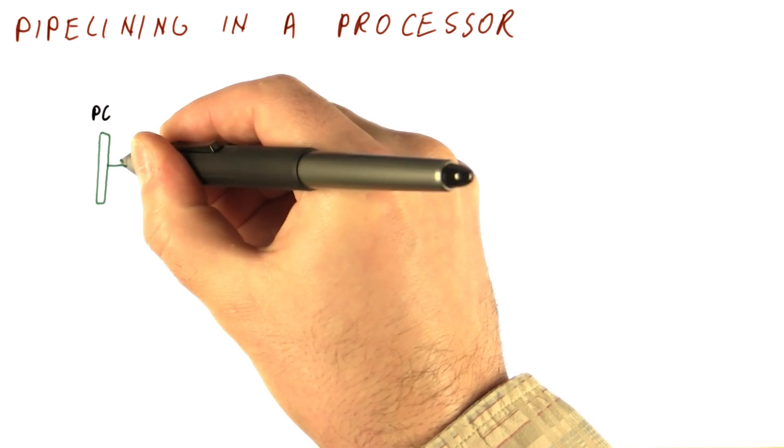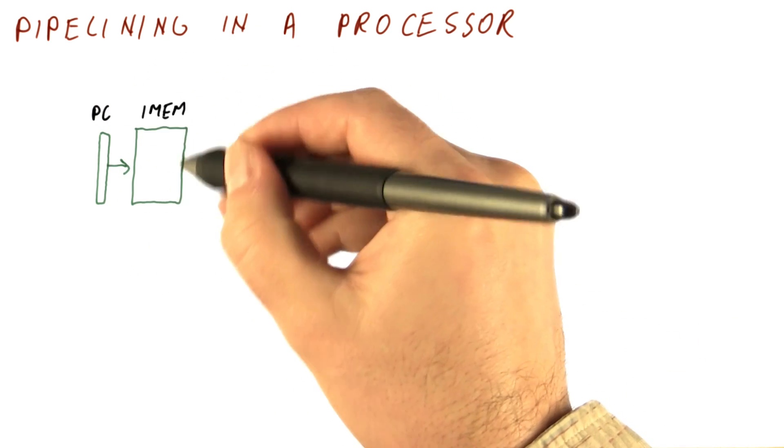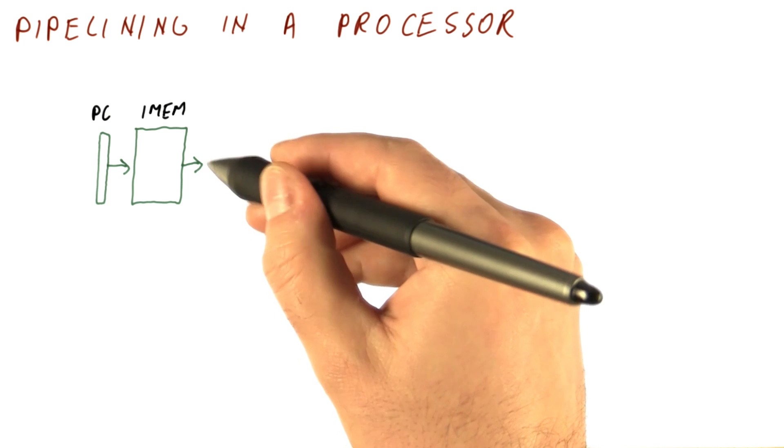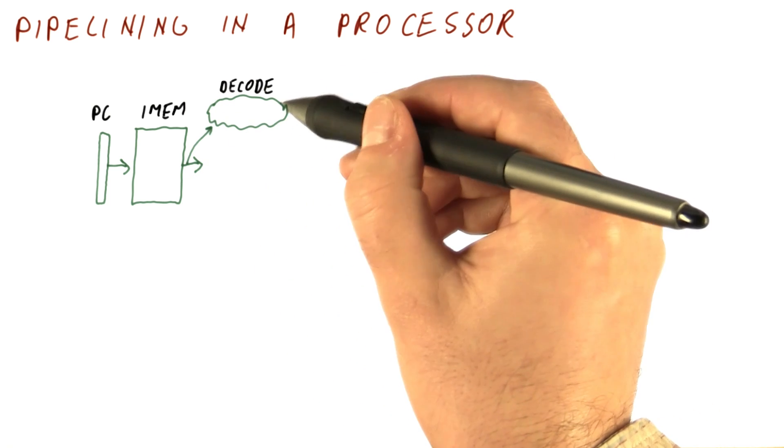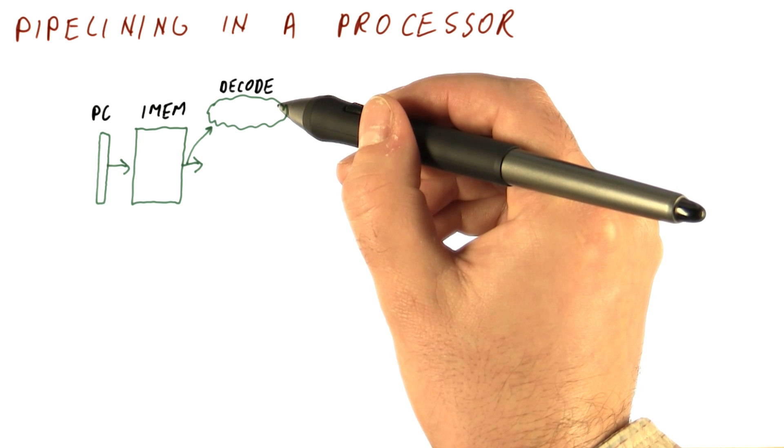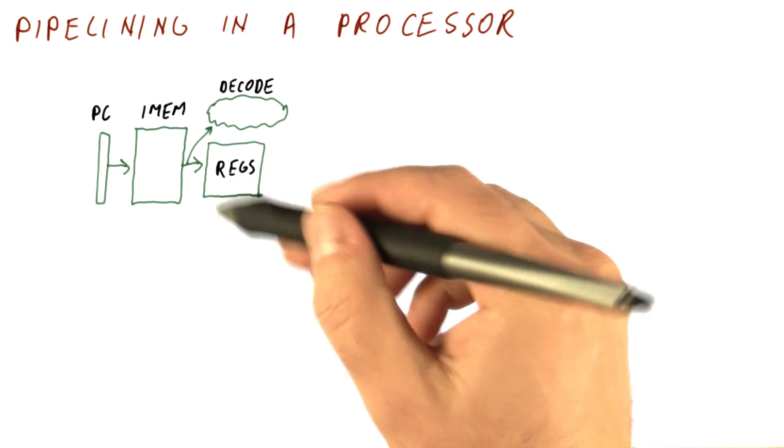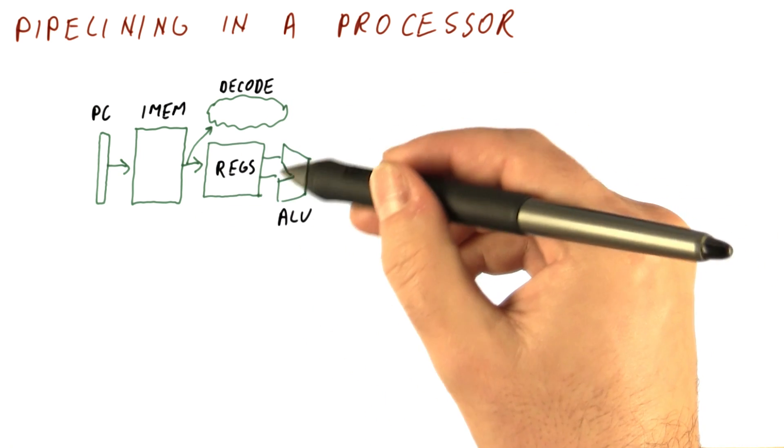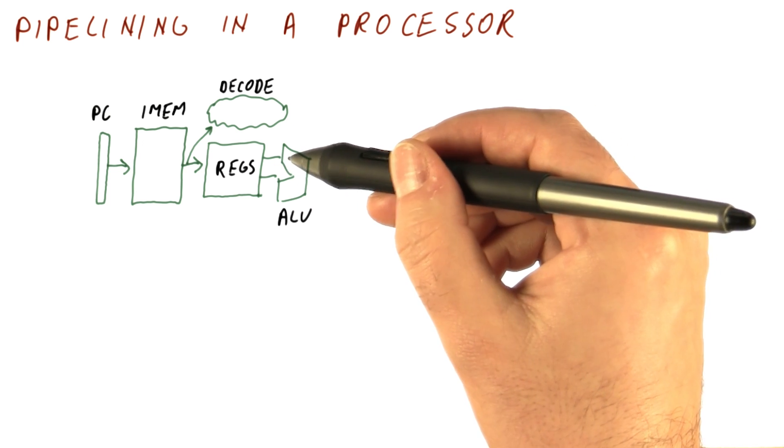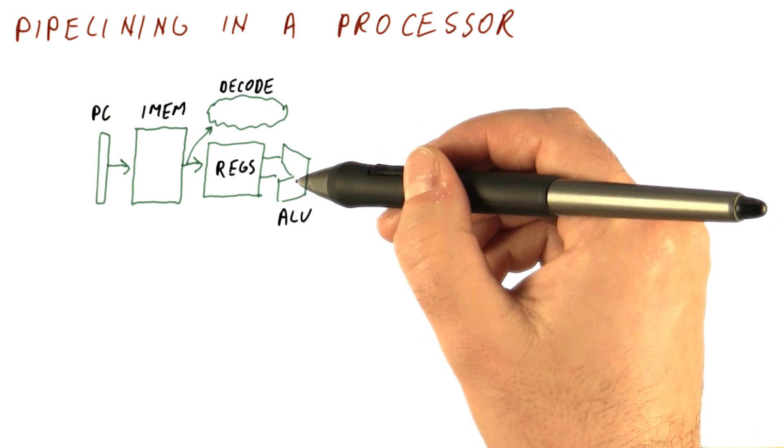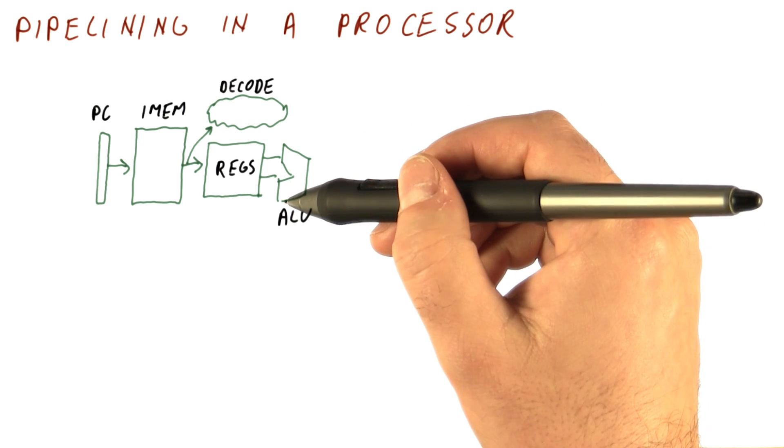We have a program counter. We use the program counter to access the instruction memory and get the instruction from there. We look at the instruction to decode it, to figure out which type of instruction it is. Meanwhile, we could be reading our registers. Once we have read our registers, we can feed them to the ALU where we're going to do the add, subtract, XOR, or whatever the instruction wants us to do.